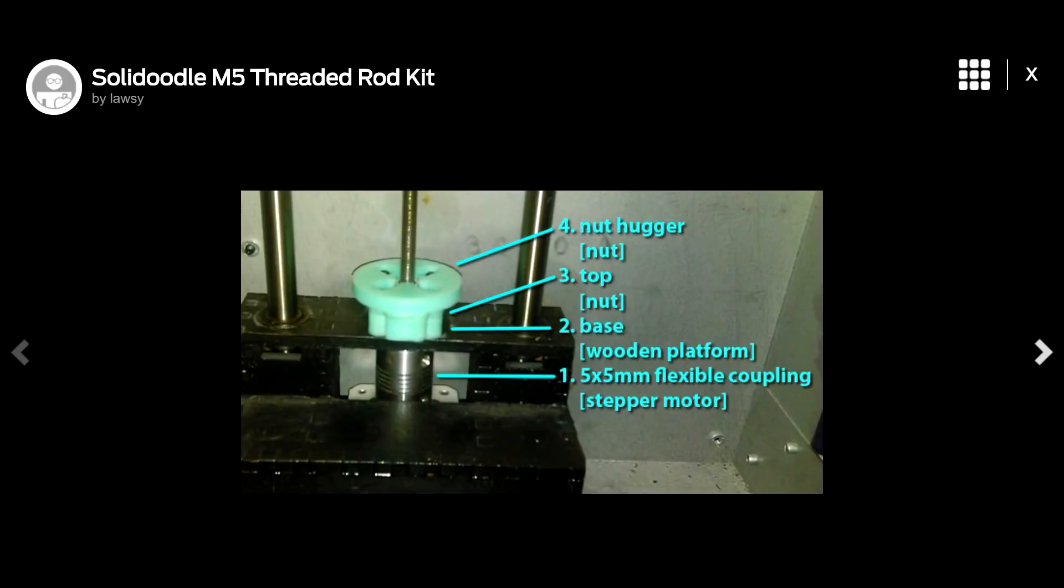but myself and a lot of other users were having trouble with Z banding. The Solidoodle by default shipped with a normal threaded rod and nut. There was a lot of backlash and a lot of inaccuracy in the prints. I changed out the original threaded rod for an M5 version because it was much much smaller and therefore the pitch was much narrower and the backlash reduced.